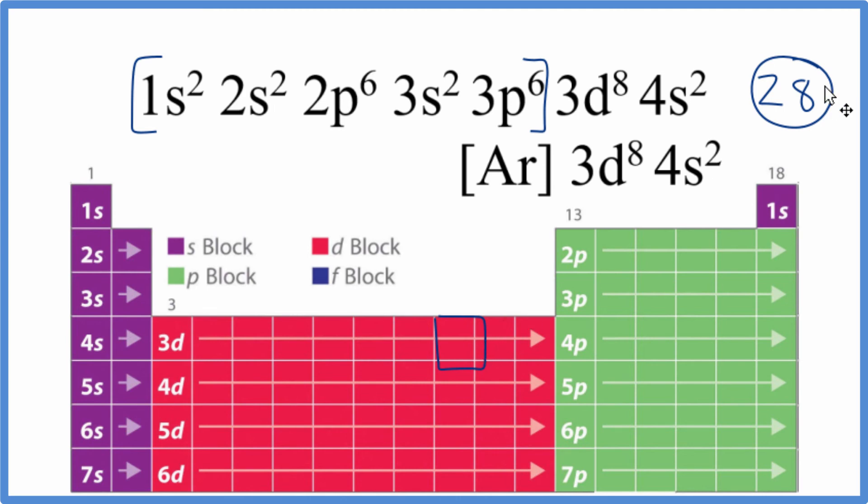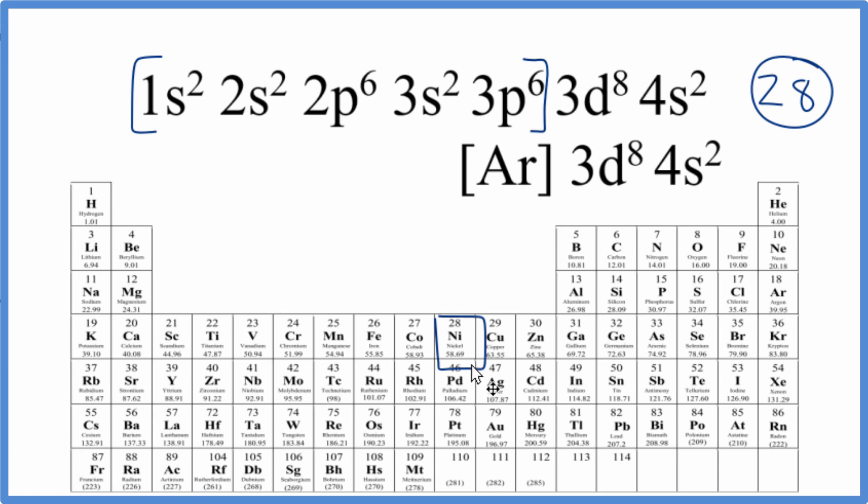So we said before we had 28 electrons and that was nickel. Here we have nickel again. So it's the same answer, just a different way to find it.